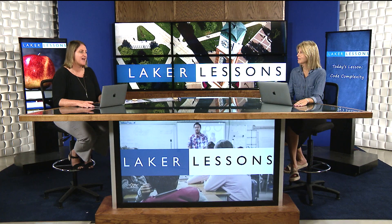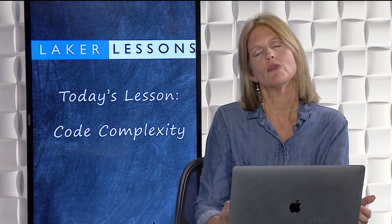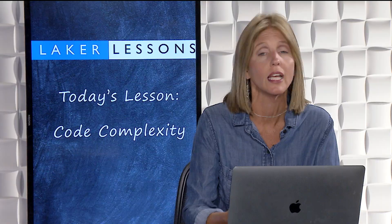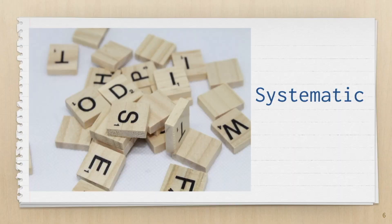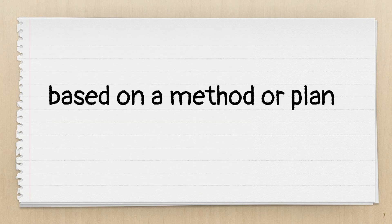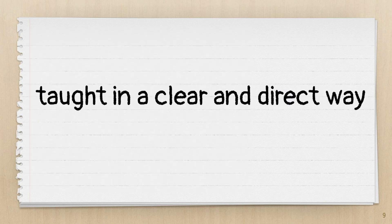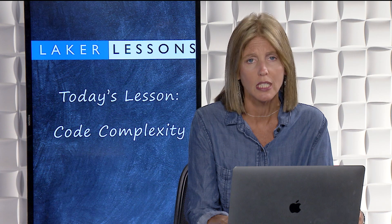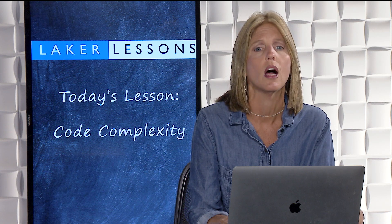Wendy is going to talk about systematic and explicit instruction. Before we move forward, we want to make sure we all have a common definition of systematic and explicit, because these are two terms you'll want to keep at the forefront of your work when looking at your phonics programs and scope and sequence. Systematic simply means your program is based on a method or a plan — you have a defined scope and sequence that makes sense for your students. Explicit means that phonics is being taught in a clear and direct way. When examining your phonics program, make sure you have a systematic and explicit manner of providing instruction.